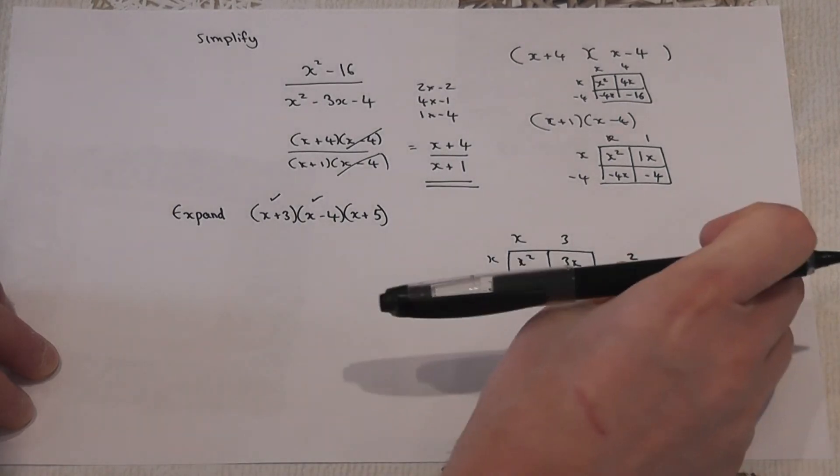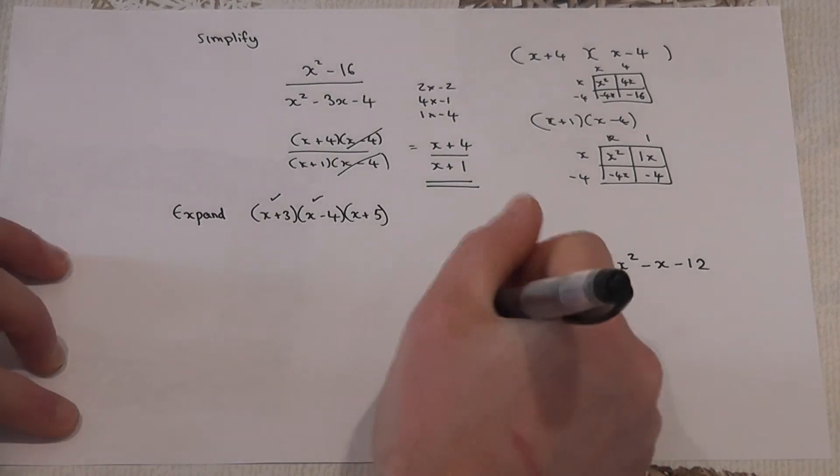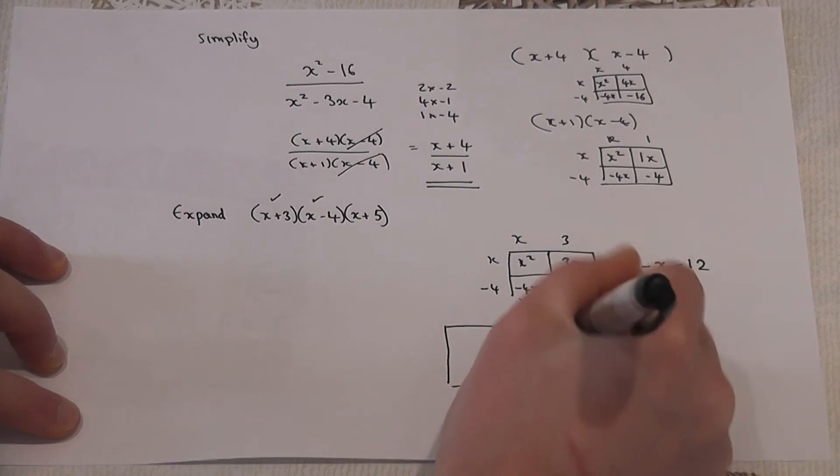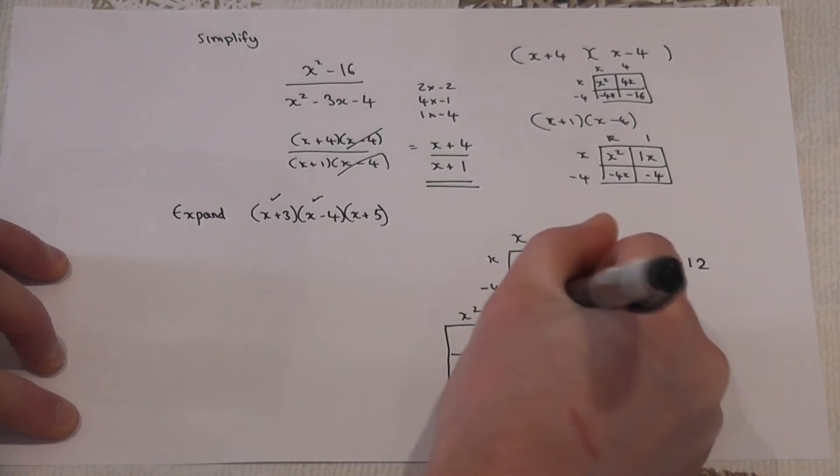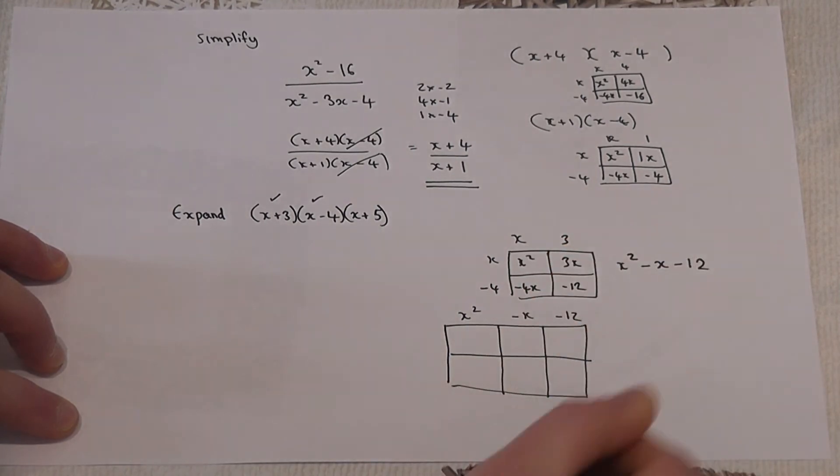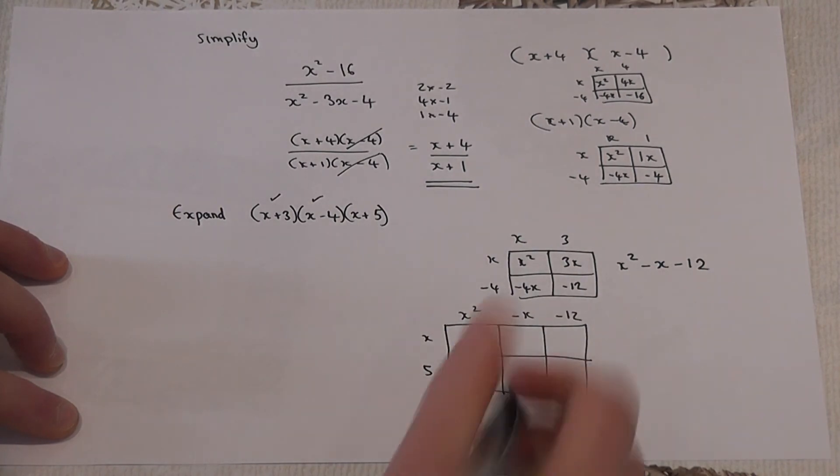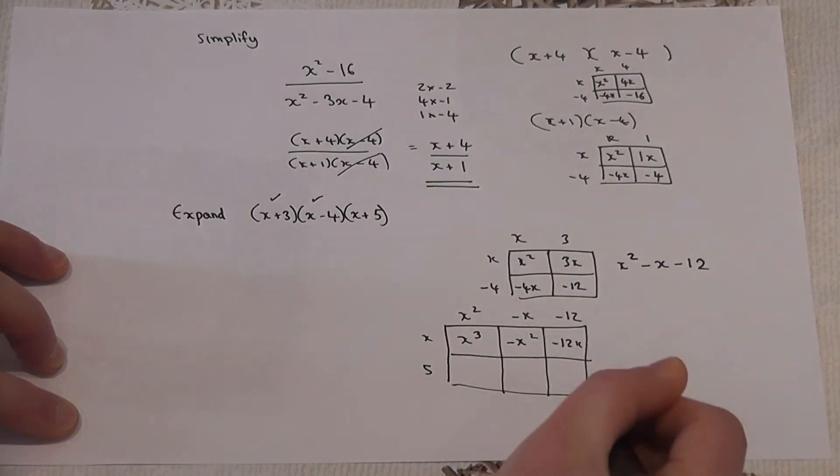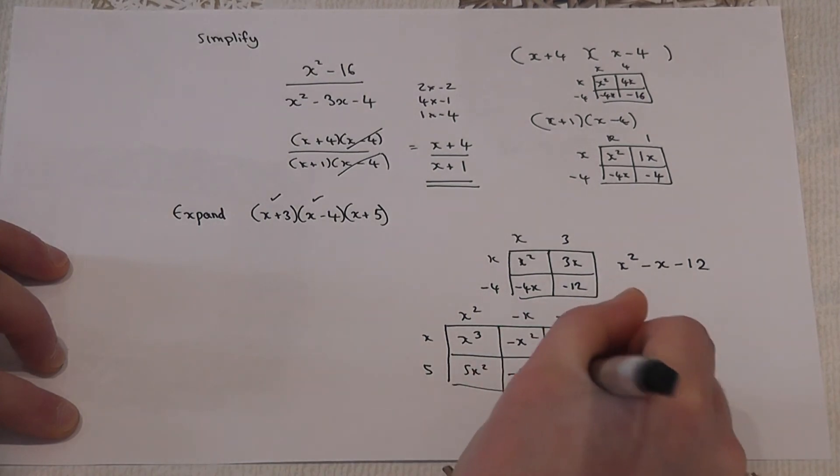I now times this answer by the remaining bracket. So I do a bigger grid. So x squared minus x minus 12 multiplied by the final bracket. So x cubed minus x squared minus 12x, 5x squared minus 5x minus 60.